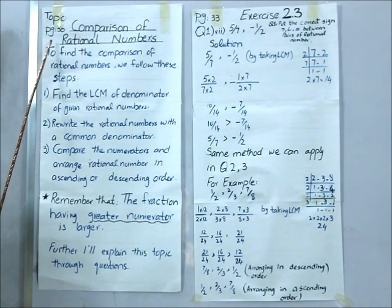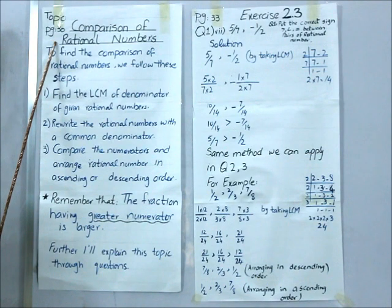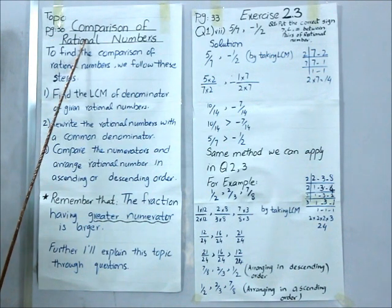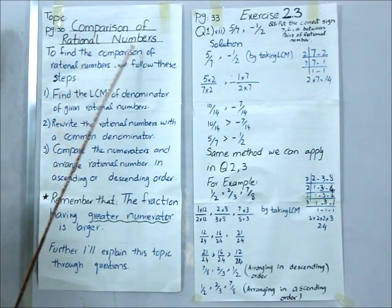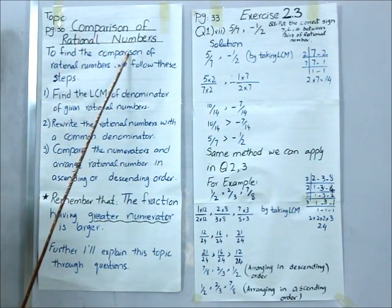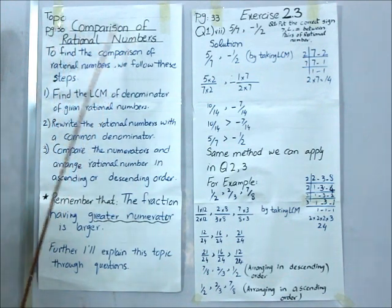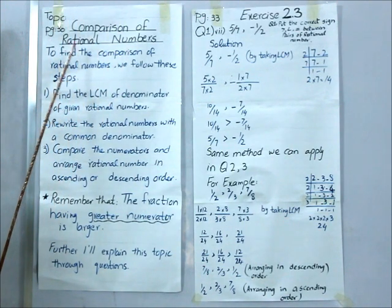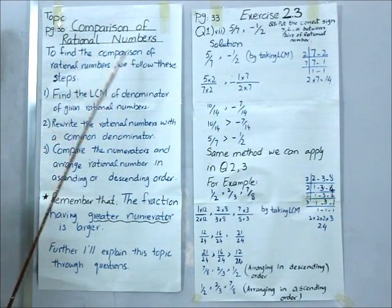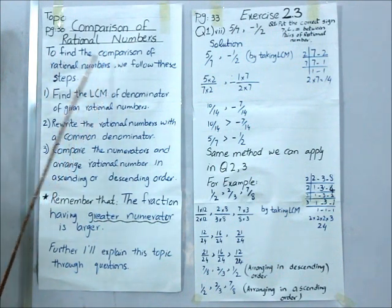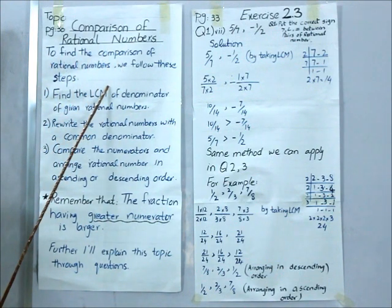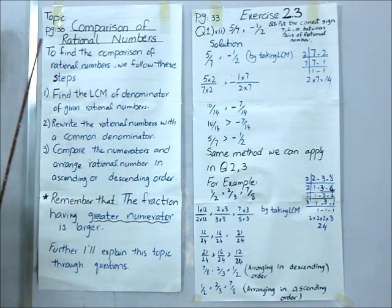Now students, open page number 30. The topic is comparison of rational numbers. In this concept, we will understand how we can compare rational numbers. To find the comparison of rational numbers, we will follow these steps.